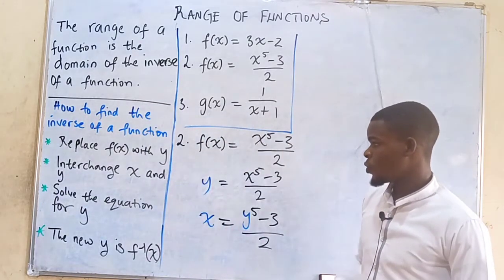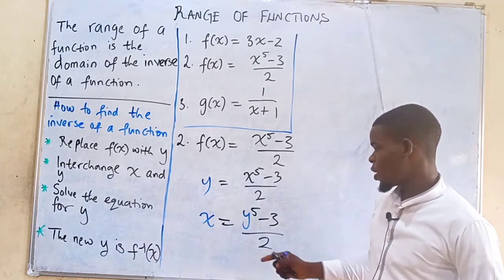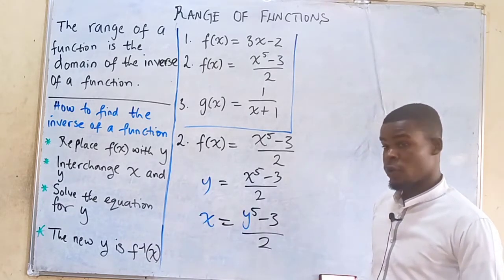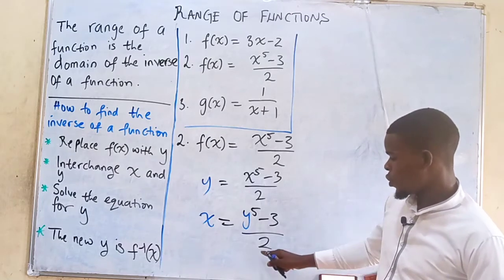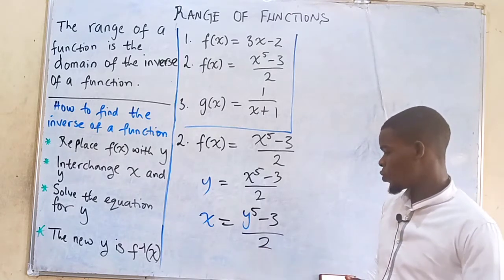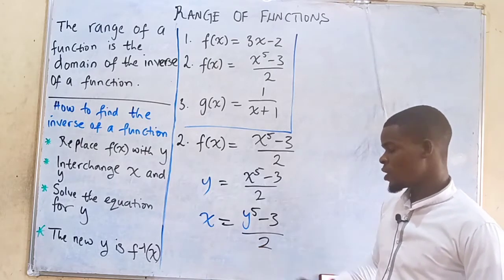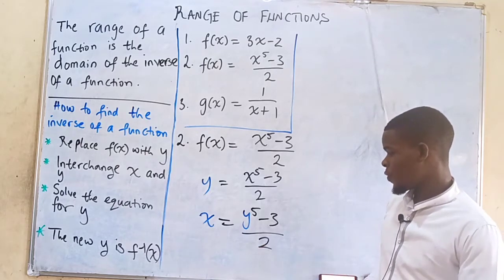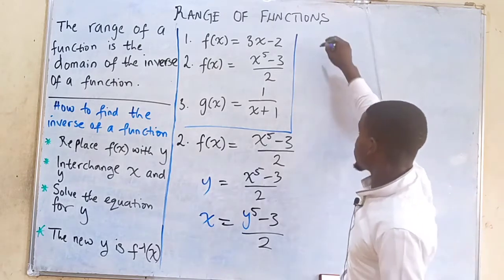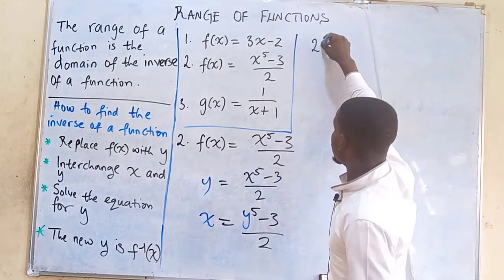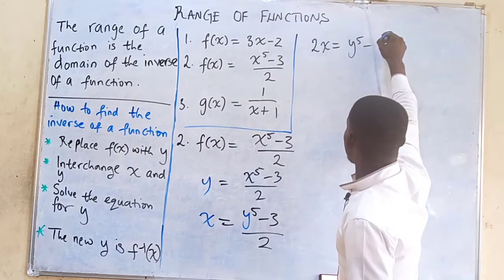The next thing we'll do is to solve the equation for y — make y the subject of the formula. To make y stand alone, we need to get rid of the 2 and the 3. Since the 2 is in the denominator, we multiply both sides by 2, giving us 2x = y⁵ - 3.